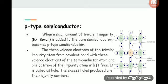P-type semiconductor: When a small amount of trivalent impurity like boron is added to the pure semiconductor, it becomes p-type semiconductor. The three valence electrons of the trivalent impurity atom form covalent bonds with three valence electrons of the semiconductor atom, and one position of the impurity atom is left free. It is called a hole. The excess holes produced are the majority carriers.